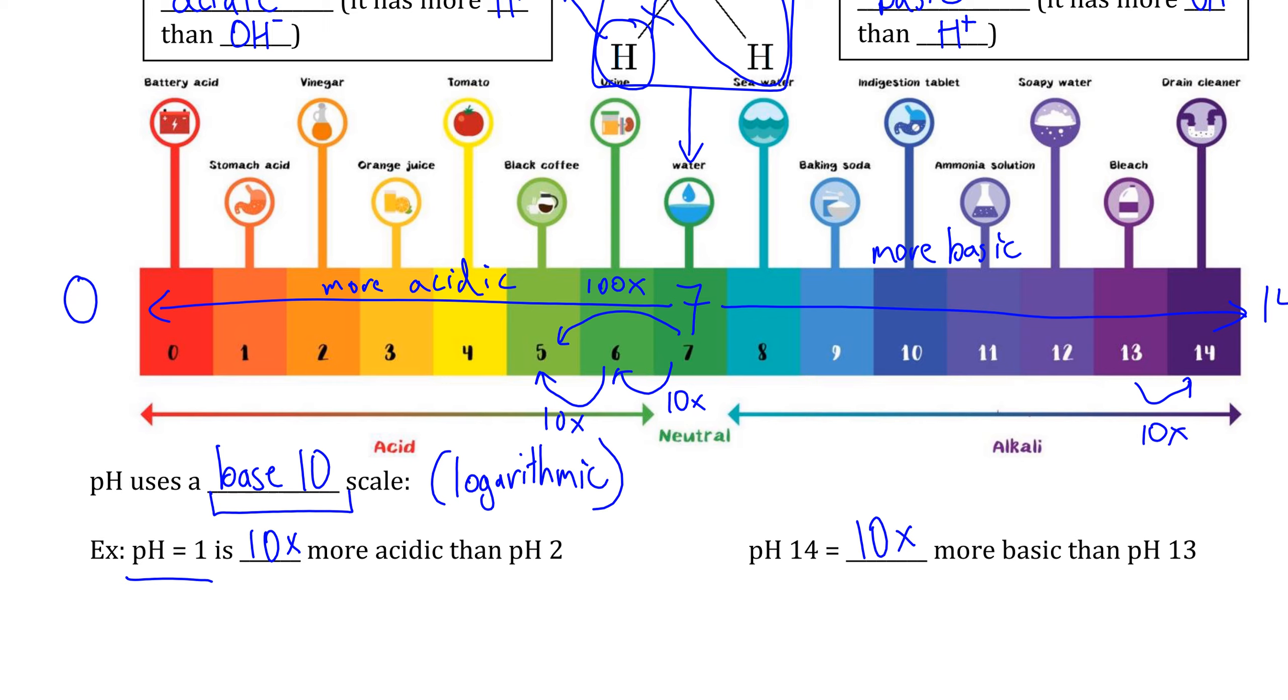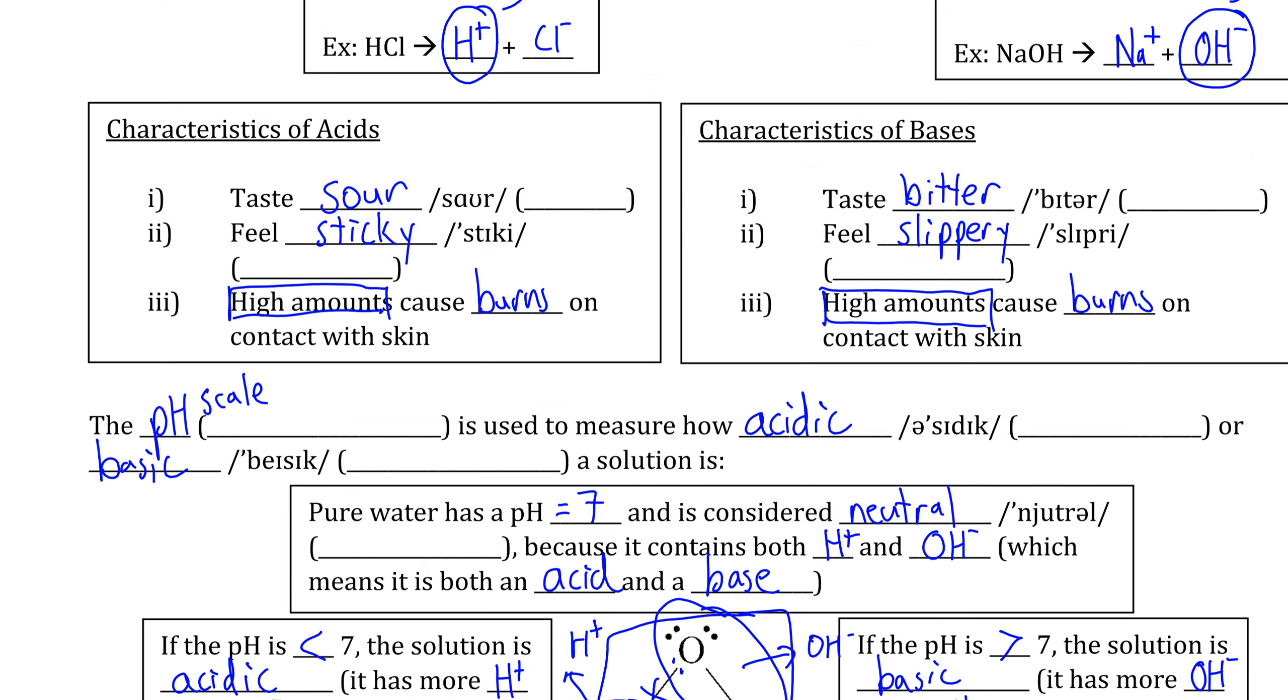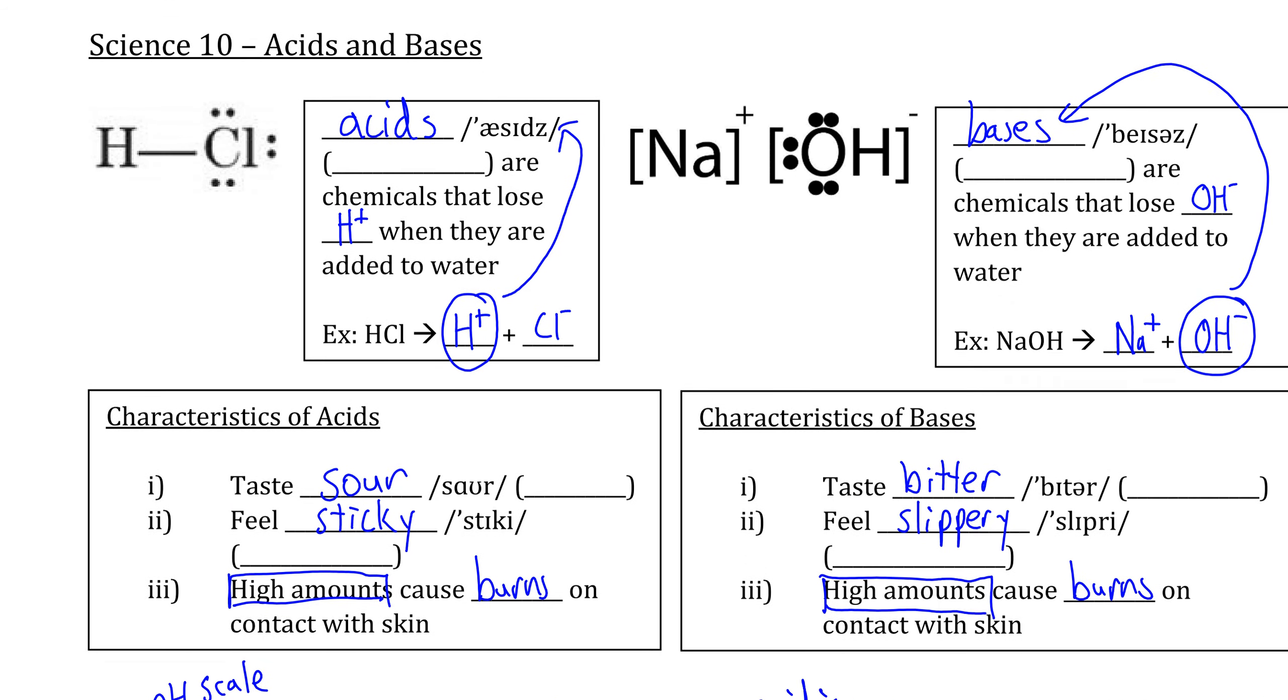Again, this is how a base 10 scale works. In the next series of videos, we're going to be looking at the different types of chemical reactions, one of which is a type of reaction that involves reacting acids with bases.